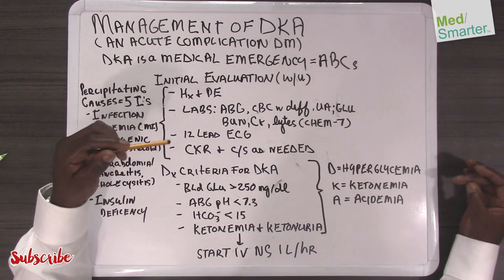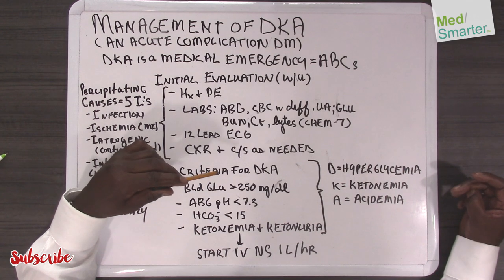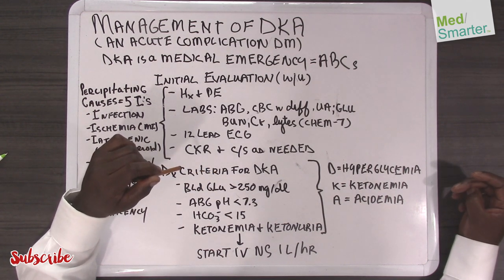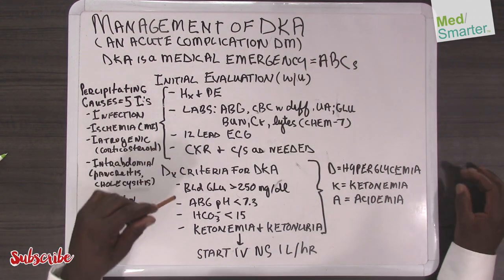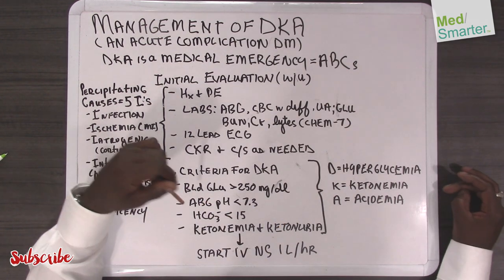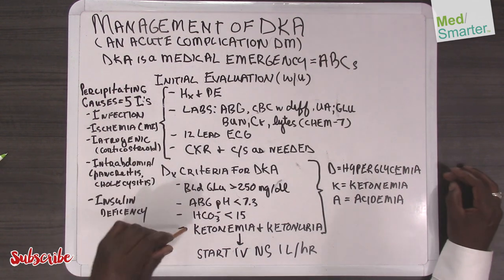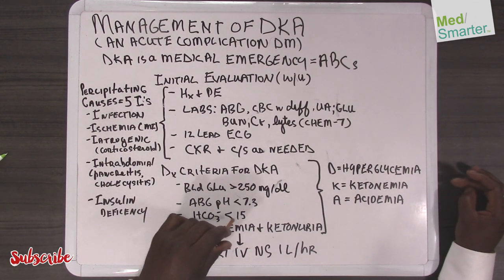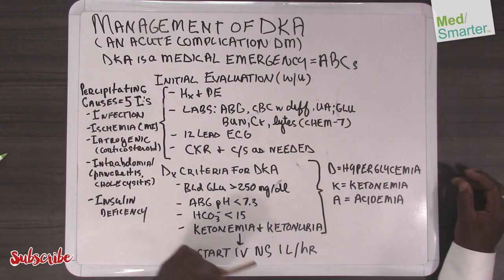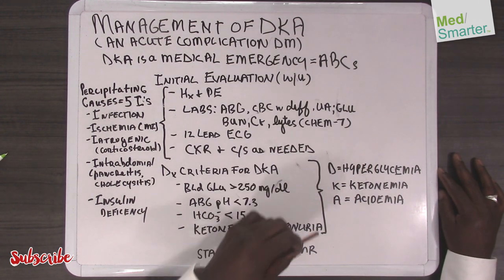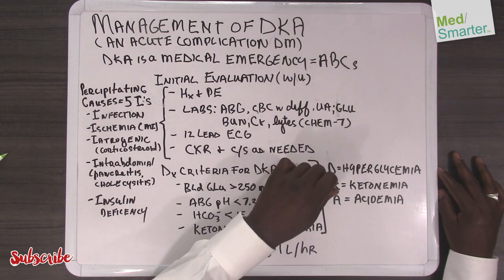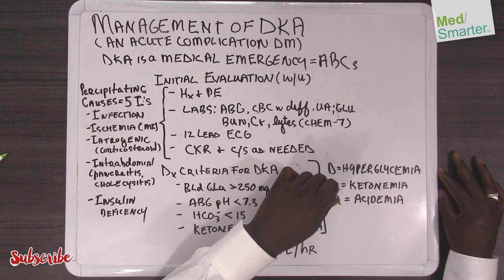There are specific diagnostic criteria to confirm the diagnosis of DKA — it is a laboratory confirmation. Those criteria include a blood glucose of greater than 250 mg/dL, an ABG with pH of less than 7.3, bicarb of less than 15, ketonemia, and ketonuria. That will prompt you to start IV normal saline at one liter per hour. We can summarize the diagnosis of DKA as hyperglycemia, ketonemia, and acidemia.